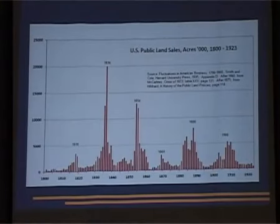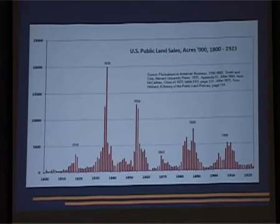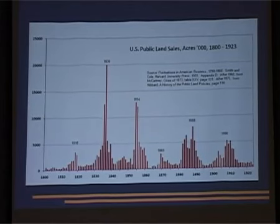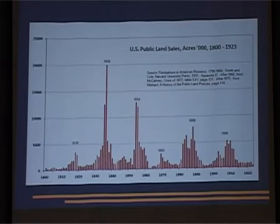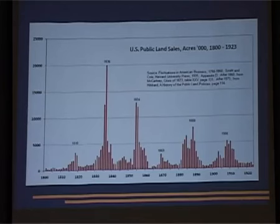In the US from 1800, the United States came under a federal constitution. The first law they passed was the selling of real estate, which any US citizen could do. So after 1800, the US government started selling off its real estate to all its citizens. That graph records the number of public land sales in acres from 1800 to 1923 to US citizens. Every 18 years, almost precisely, there was a major boom in land speculation, and then after that a major contraction and a downturn that put everybody out of work.